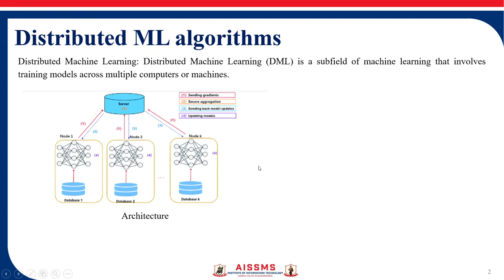You can see here the architecture which consists of different databases connected with the server. How it works is shown through these messages by numbers: one is for sending a gradient, two is for secure aggregation, three is for sending back model update, and four is for updating models.